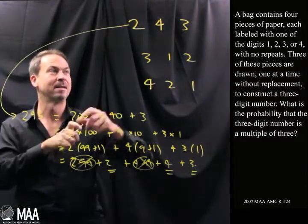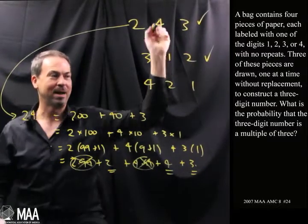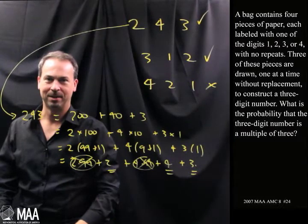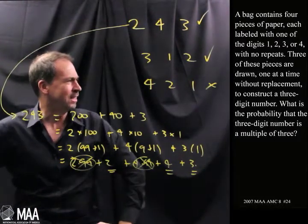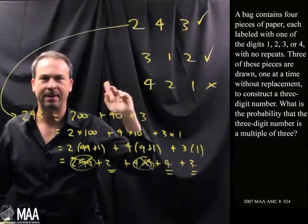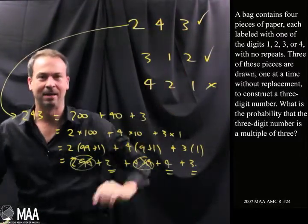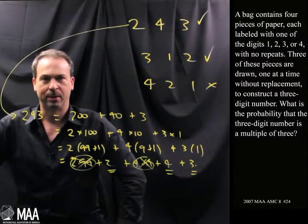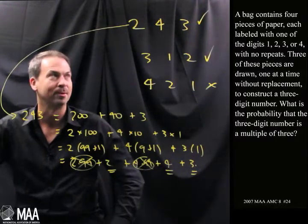So 2, 4, 3 adds up to 9. That's a multiple of 3. 3 plus 1 plus 2 adds up to 6. That's a multiple of 3. 4 plus 2 plus 1 adds up to 7. That's not a multiple of 3. Hang on. That was a sidetrack. What was the question? We've got these 4 cards labeled 1, 2, 3, and 4. Get a 3-digit number like this. What's the probability that they give you a multiple of 3? That is, what are the chances that the 3 digits you get add up to a multiple of 3? I spent all this time just understanding the question, understanding the mathematics of multiples of 3.